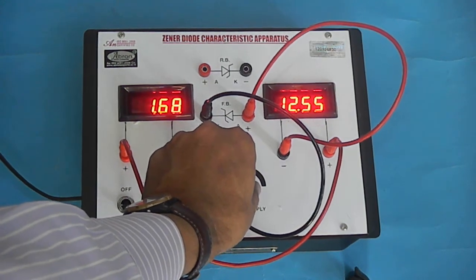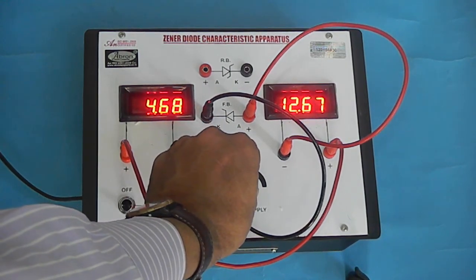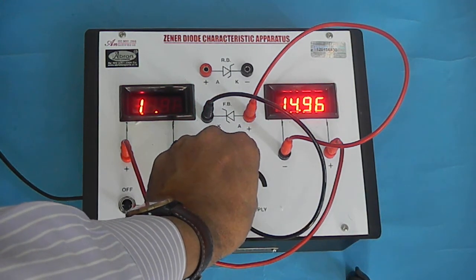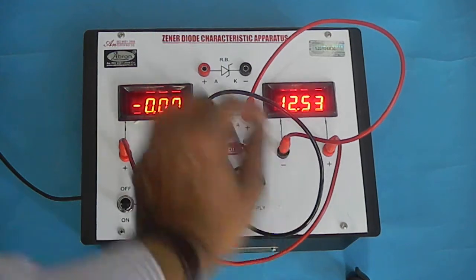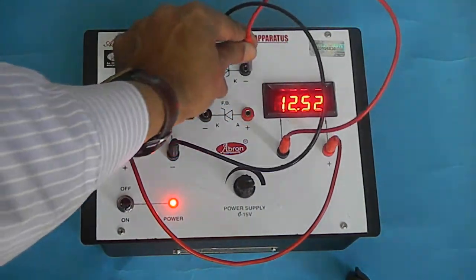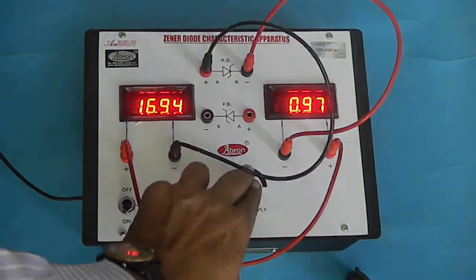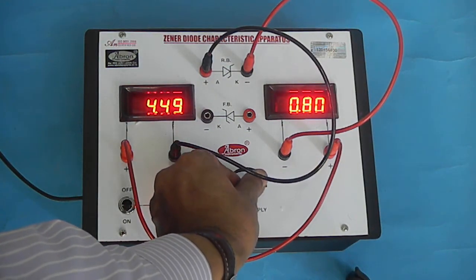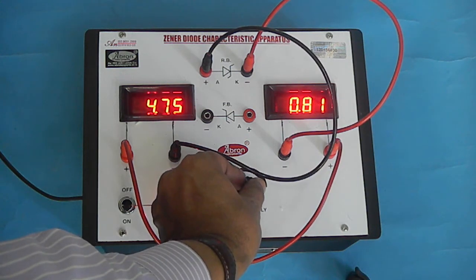Now this is the voltage in the forward direction. If you change it to the other position, you can see the reverse direction. Even with low voltage, as you keep increasing the voltage, you can see very little current passing in the reverse direction.